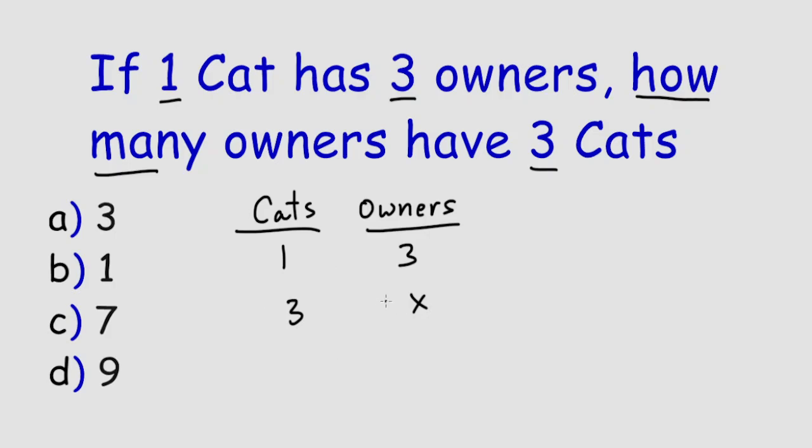Okay, what we have here is a rule of threes. We have three knowns and one unknown. There's ratios and proportions.